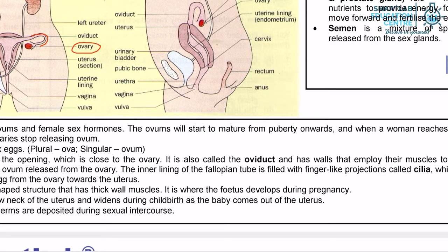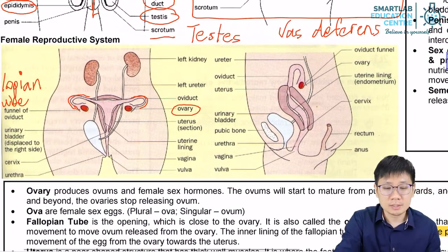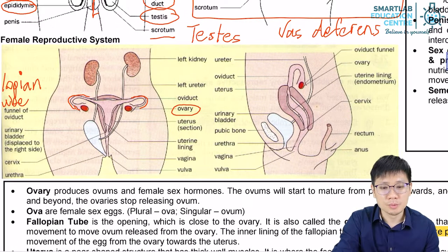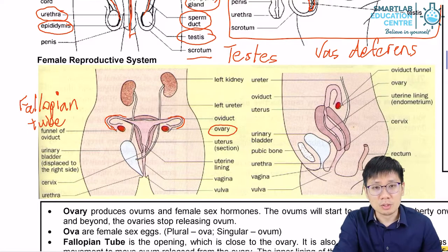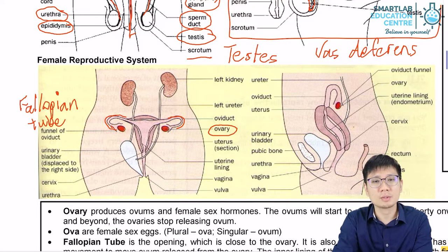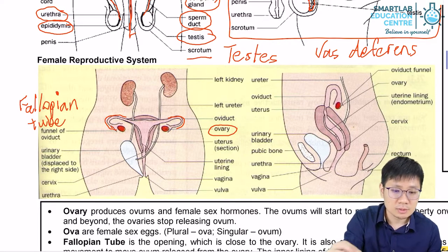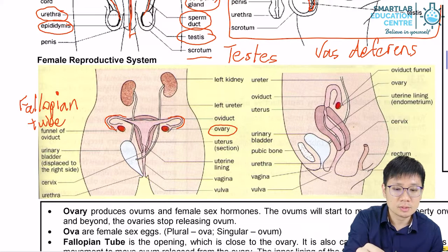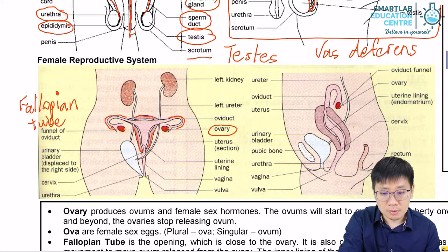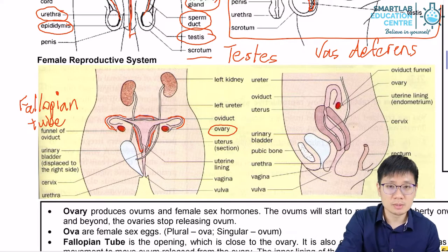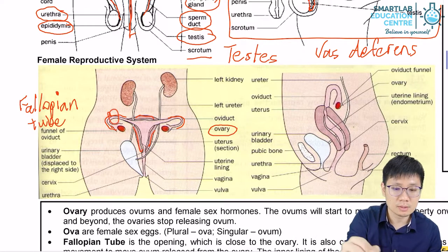The finger-like projections called cilia are not shown in the picture, but they are there and will be what moves the ovum. The ovum has no tail and cannot move on its own, so it relies on outside forces. The ovum will only survive for approximately one to two days, but the journey from the ovary into the uterus may take more than two days — maybe one week or more. This means the ovum will almost certainly die before it reaches the uterus. Therefore, if fertilization is to occur between the sperm cells and the ovum, fertilization must occur in the fallopian tube.